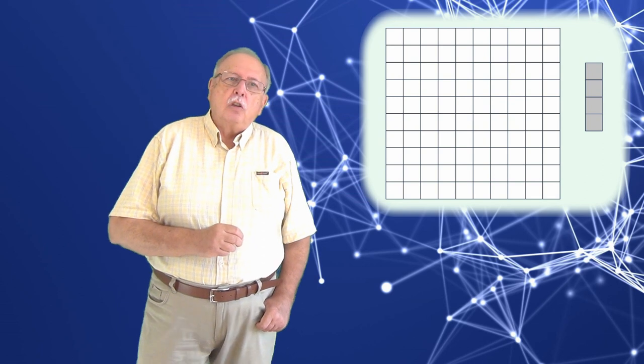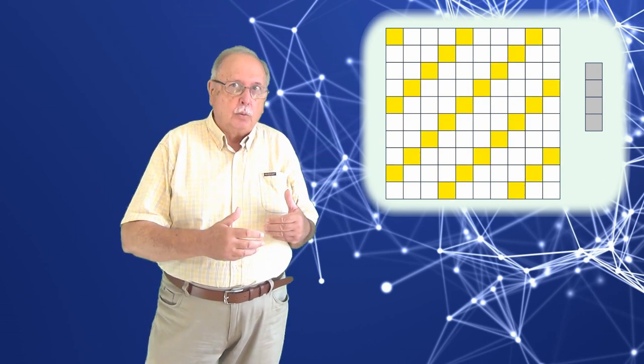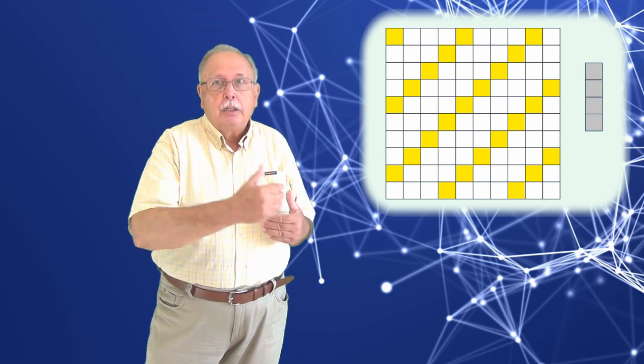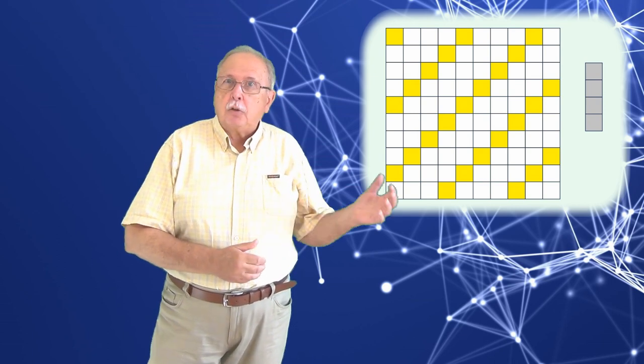Să colorăm, să zicem, cu galben, începând cu colțul din stânga, pătratele aflate din 4 în 4, atât pe orizontală, cât și pe verticală, așa cum vedeți în desen.